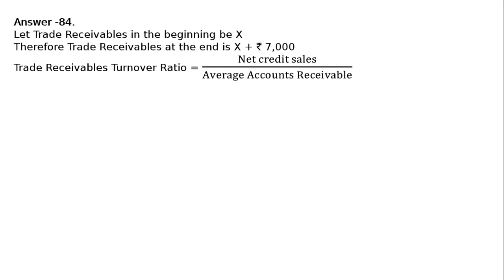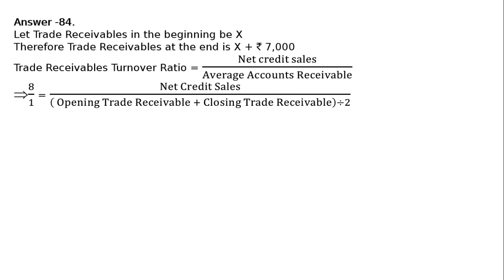Therefore, trade receivables turnover ratio is equal to net credit sales upon average accounts receivable, that is equal to 8 upon 1. So: 8/1 = net credit sales / [(opening trade receivables + closing trade receivables) / 2]. This implies that 8 equals net credit sales Rs.75,000 divided by the average.